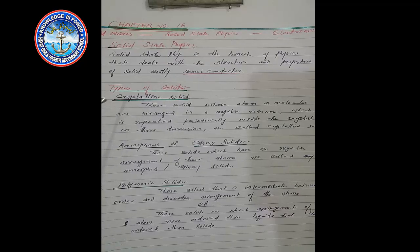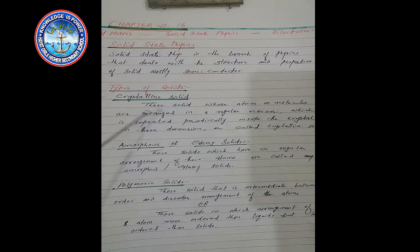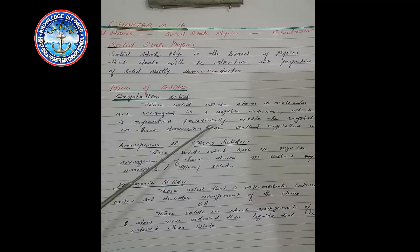Types of solids: Number 1 — Crystalline solid. Number 2 — Amorphous solid. Number 3 — Glassy solid. Number 4 — Polymeric solid. A crystalline solid is one whose atoms or molecules are arranged in a regular manner, which is repeated periodically in three dimensions inside the crystal.